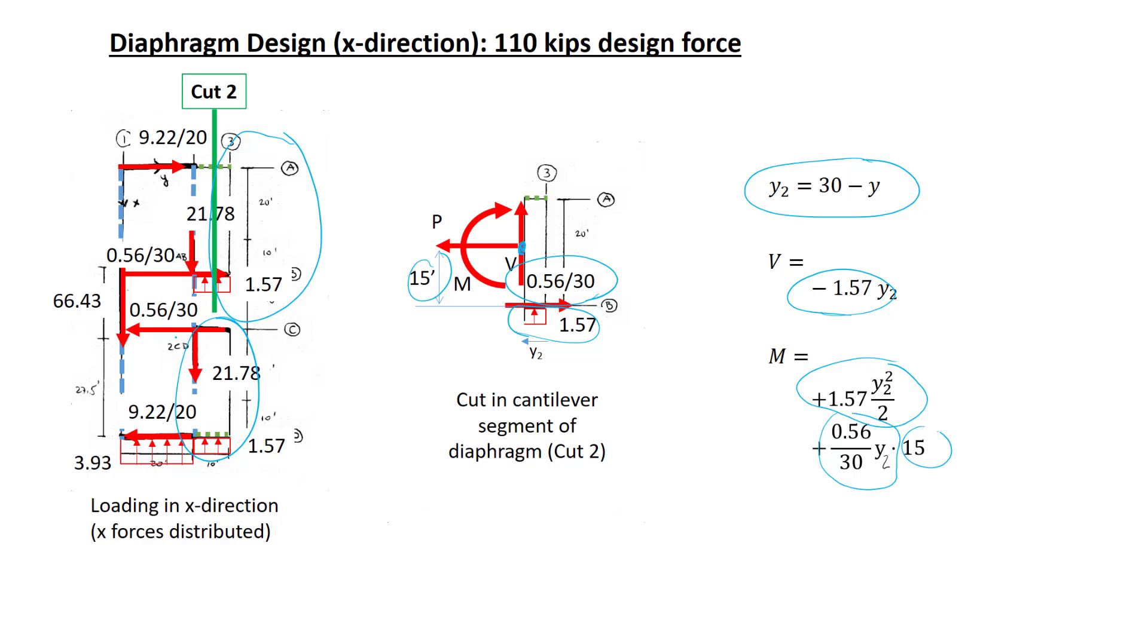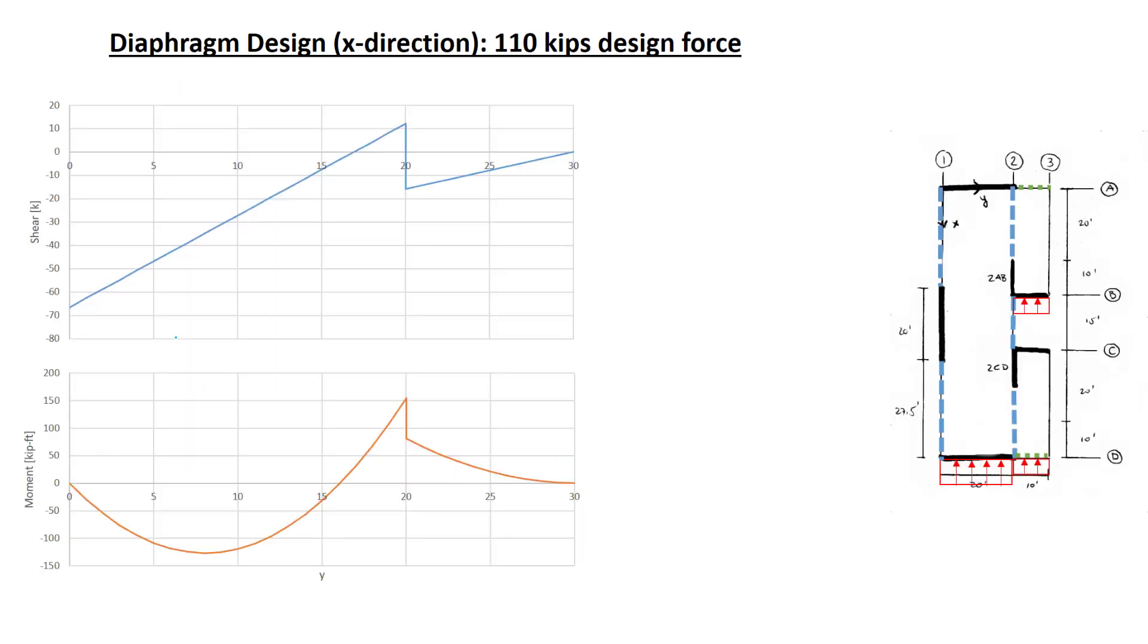So now we have cuts over the relevant segments of the diaphragm. We have the equations. Now let's plot our shear and moment diagrams. There's no reason that these diagrams need to match up. Specifically right here, this looks very strange, but we remember that one of the cuts had to do with the whole 75 foot depth. The other cut had to do with simply the depth between lines A and B. Now we'll use these diagrams to get the design forces for the diaphragms.